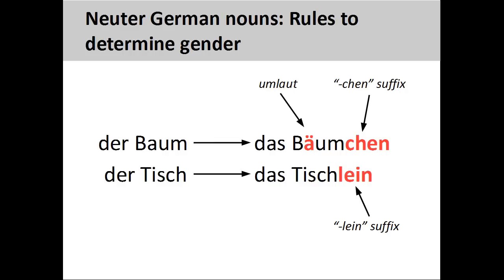All diminutive constructions will be neuter. Nouns in their diminutive form indicate a smaller version of something, or communicate informality, cuteness, or affection. To turn a noun into its diminutive form, you add the suffix -chen or -lein to the noun, and if possible, add an umlaut to the noun vowel.